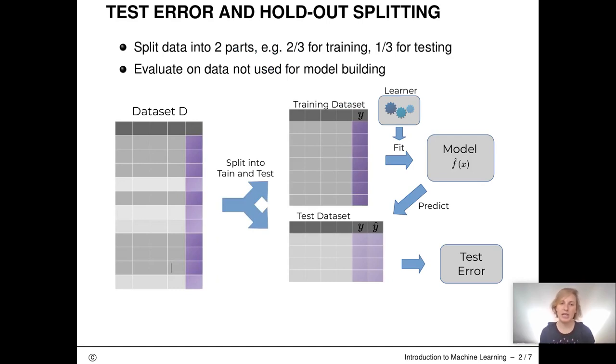What we usually do to obtain the two data sets is we split the data set we have in two parts. This is then called holdout splitting. For example, we use two-thirds of the data for training and one third for testing.